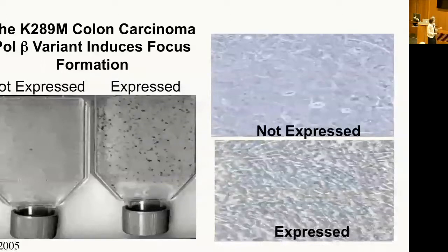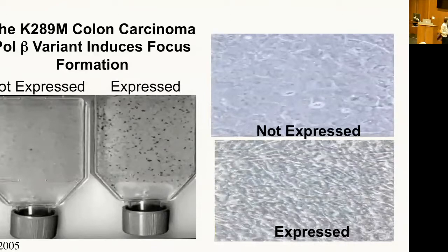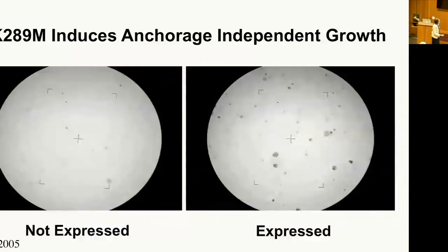Here we're expressing K289M in mouse cells that are non-transformed but immortal. If we don't express it, we don't see foci — these are old-fashioned foci, cells growing on top of each other. If we express it, we see lots of foci or cellular transformation. We can do the same with wild-type protein at position 289 and we don't see this phenotype at all. We're expressing K289M at similar levels to the endogenous polymerase. We've also shown that it can induce anchorage-independent growth — these are colonies growing in soft agar.